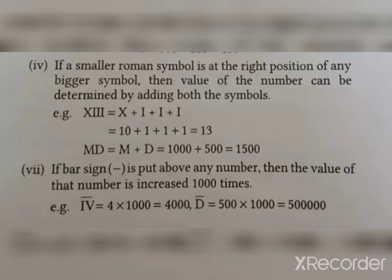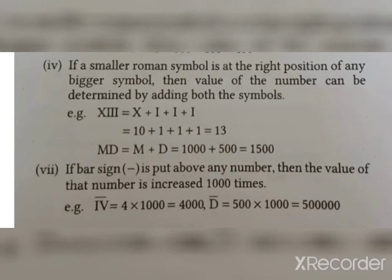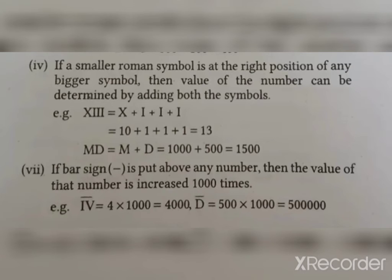The next one is, if bar sign is put above any number, the value of that number is increased 1000 times. For example, IV with a bar, 4 into 1000, so 4000. D with a bar, 500 into 1000, 5 lakh.